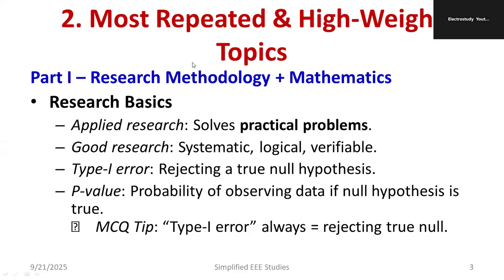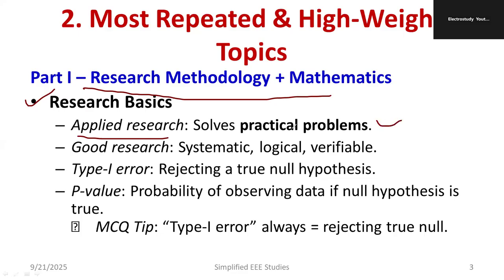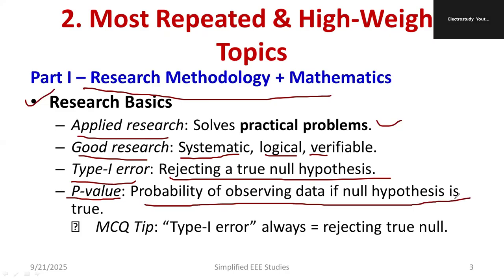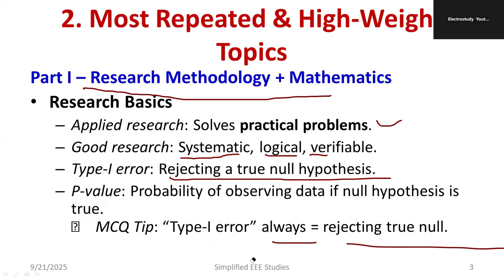Next I am going to talk about the most repeated and probable questions which you should give more weightage for the forthcoming examination. Part 1 is research methodology and mathematics. You have to study the basics of research: what is applied research, what is fundamental research. Applied research is research which helps in solving practical problems. Study features of good research — they are systematic, logical, and verifiable. Type 1 error is very important: rejecting the true null hypothesis. What is p-value? It is the probability of observing the data if the null hypothesis is true.